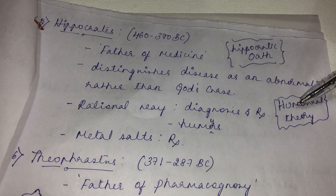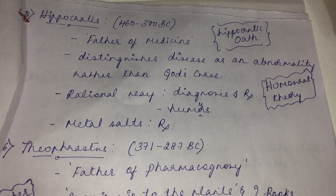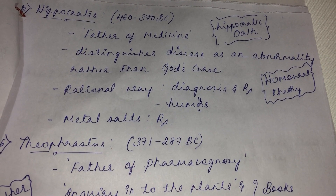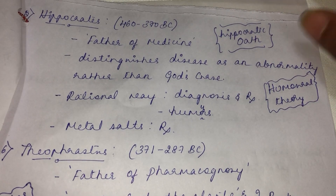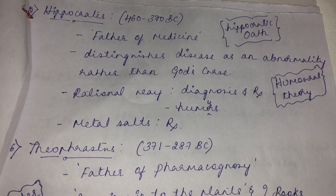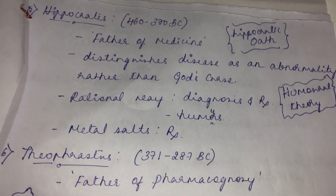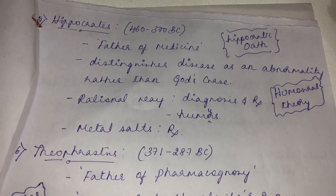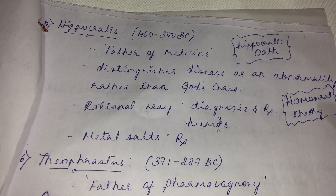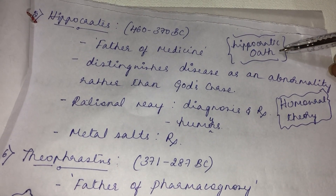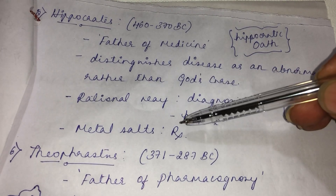Hippocrates' famous theory was the humoral theory. According to this theory, there are four humors present in the body: black bile, yellow bile, phlegm, and blood. As long as there is balance between these four humors there will be normal function; whenever there is imbalance it leads to disease. His treatment aimed to balance these four humors. He was rightly called the father of medicine, and MBBS students still take the Hippocratic oath. He also introduced metallic salts for treatment.